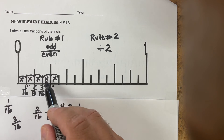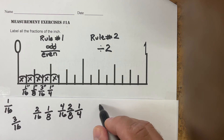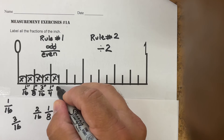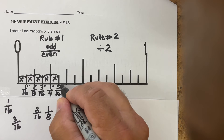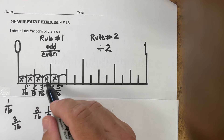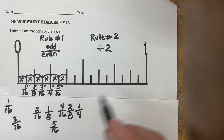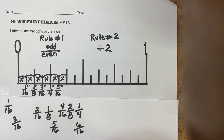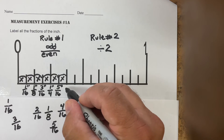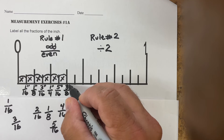The next increment is five sections out of a possible 16. Is five over 16 odd over even? Yes it is, so my final answer is five-sixteenths of an inch. The next one is six sections out of a possible 16. Six over 16 is not odd over even, so I apply rule two: two goes into six three times, two goes into 16 eight times. Three over eight is odd over even, so the answer is three-eighths of an inch.